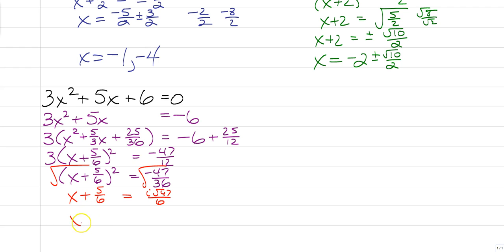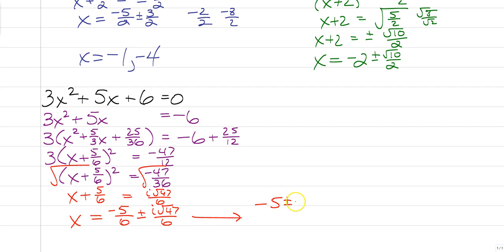Subtract 5 sixths from both sides, and x equals negative 5 sixths plus or minus i root 47 over 6. You can also write it as negative 5 plus or minus i root 47 all over 6, since they have the same denominator. And if that one seemed easy to you, you are a rock star. That last one is quite a difficult question. We'll have plenty of time to talk about more like this, or any easier ones in class, so make sure you are ready. This is Longo and I'm out.